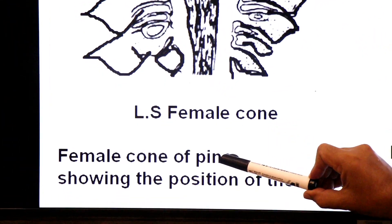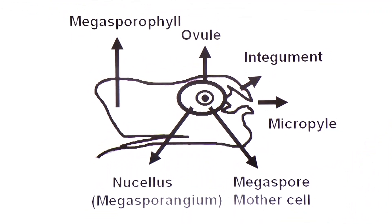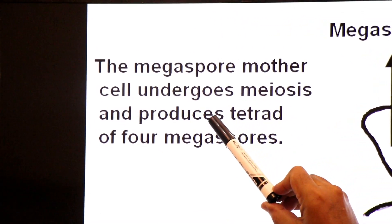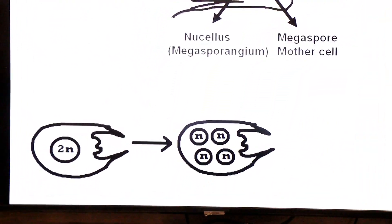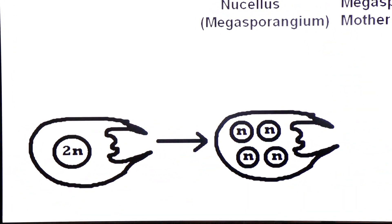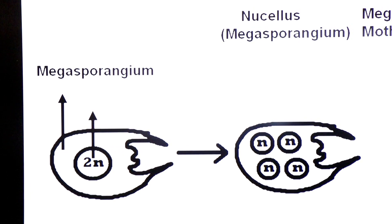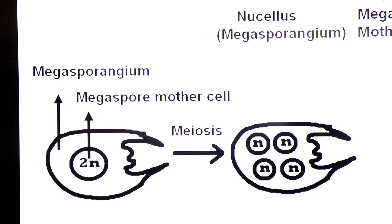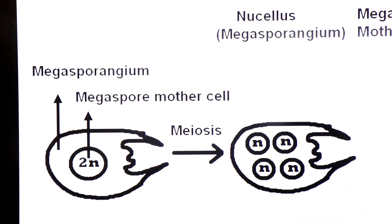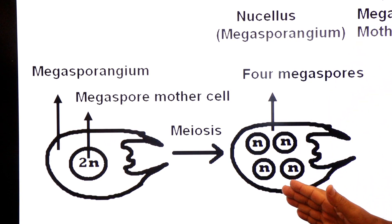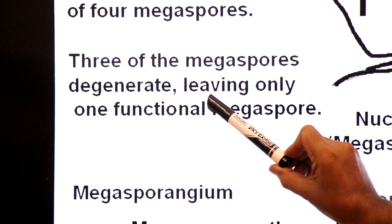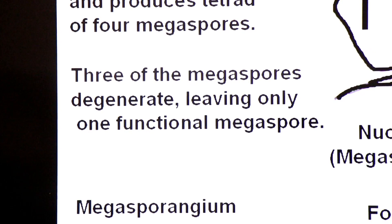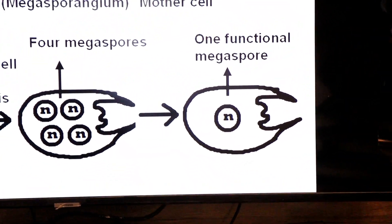The megaspore mother cell undergoes meiosis and produces a tetrad of four megaspores. Inside the megasporangium (nucellus), the megaspore mother cell divides by meiosis to produce four haploid megaspores in a tetrad. Three of the megaspores degenerate, leaving only one functional megaspore.